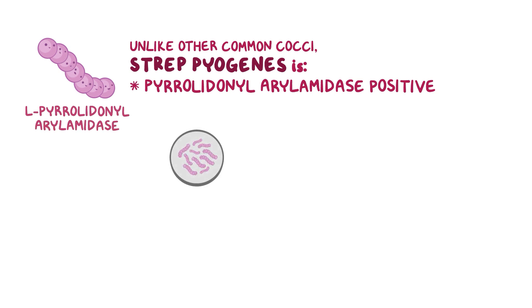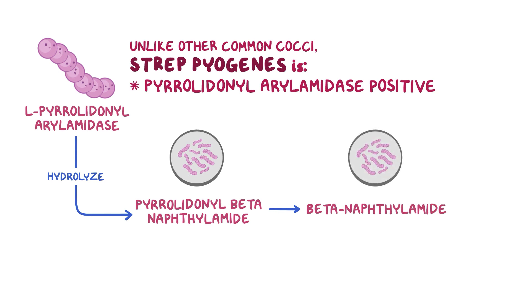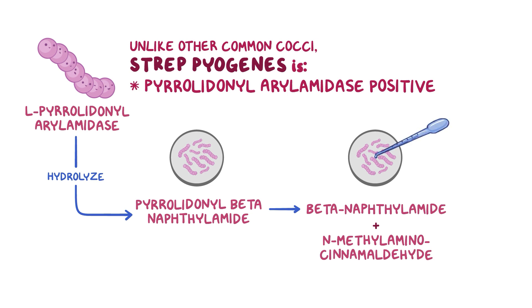To test for this, a small sample is taken from a suspected bacterial colony and then inoculated to a disc pad embedded with pyrolidonyl beta-naphthylamide. With strep pyogenes, pyrolidonyl arylamidase hydrolyzes pyrolidonyl beta-naphthylamide to produce beta-naphthylamide. Another reagent called N-methylaminocinamaldehyde is added to the disc, and it reacts with beta-naphthylamide, resulting in a bright red color that confirms strep pyogenes is pyrolidonyl arylamidase positive.